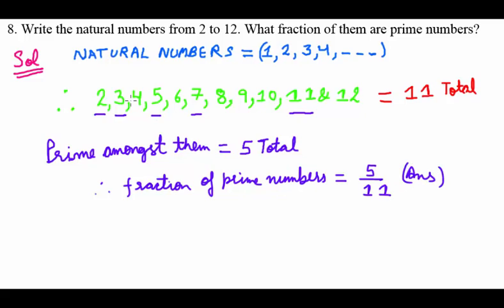By the way, we were required to write all natural numbers from 2 to 12. All the numbers in green are natural numbers. This was your answer.